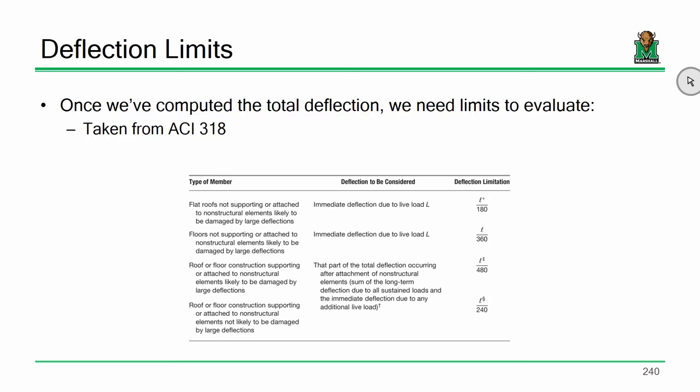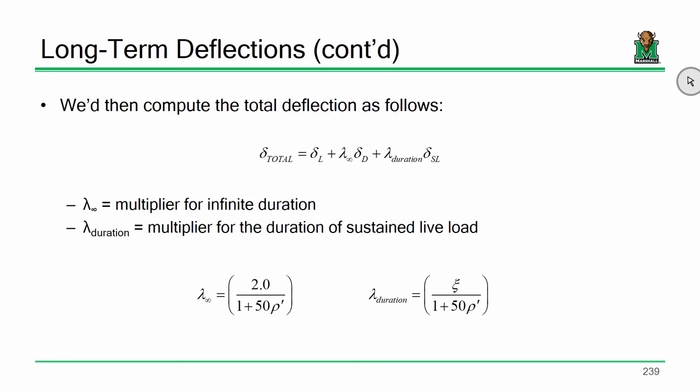The limits are in your book in Chapter 6. A student asked: is the factor for infinite duration the same as for the sustained live load? Not necessarily — if your live load is only sustained for six or twelve months, that's the only duration you incorporate. The reason for an infinite duration factor is because dead loads are always going to be there no matter what.